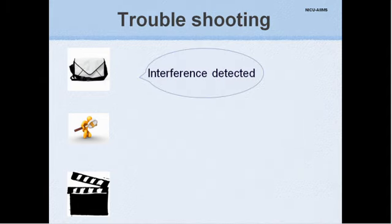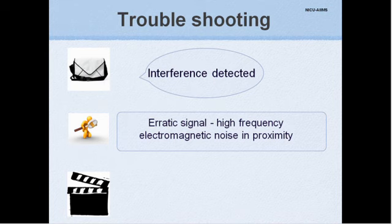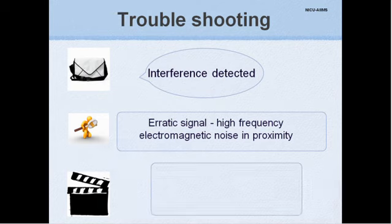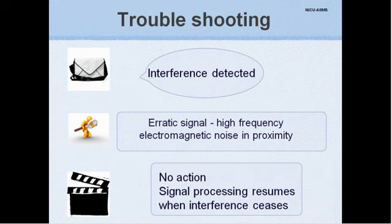If interference is detected, it means that the signal is too erratic to be processed due to proximity of other electrical equipment generating high frequency electromagnetic waves. Generally, no action is required as the readings do not change with the interference or they become dashes if the interference persists. Signal processing resumes when the interference ceases.